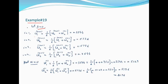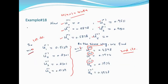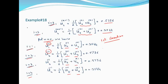j=1 के लिए equations याद होंगी। Example 18 में i=1, 2, 3, 4 के लिए set of equations निकाली थीं। Gauss-Seidel use कर रहे हैं तो i-1 की जगह N+1 आ जाएगा। Jacobi में N था वहाँ।